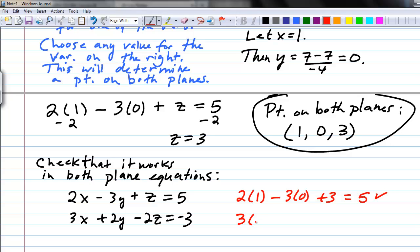For the second equation, we've got 3 times 1 plus 2 times 0 minus 2 times 3. That gives us 3 minus 6, which is negative 3, and that's what it's supposed to be. So we check that one off as well. This is one of an infinite number of points on this line of intersection that's on both planes.